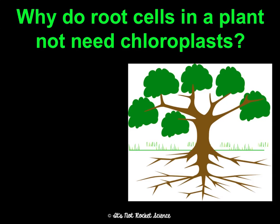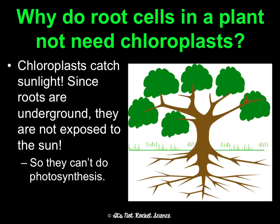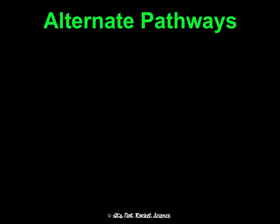Why don't root cells in a plant have chloroplasts? Because chloroplasts catch sunlight, and since roots are underground and not exposed to the sun, there would be no purpose for them to be there. So root cells can't do photosynthesis at all.